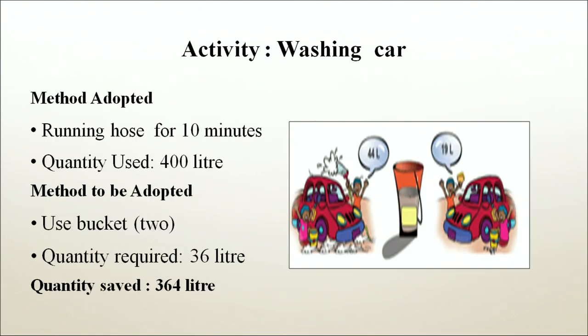For washing a car — running a hose for 10 minutes uses 400 litres; using 2 buckets requires 36 litres. Other simple water-saving methods: monitor your water bill to track family water consumption, and if consumption is more than average, recheck your family's water use habits. Take shorter showers. Wash food, dal and vegetables in a filled sink instead of under running water. Fill your washing machine to a full load. Collect grey water from the washing machine, flushing toilets or mopping the floor. Repair leaks and leaking taps immediately to prevent water wastage. Use half flush for liquid waste.